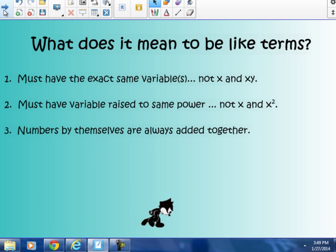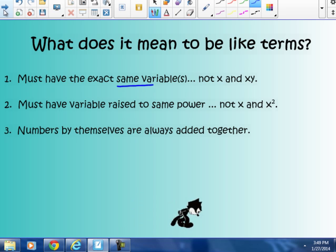What does it mean to be like terms? First, like terms. Like terms must have the exact same variable. Not like that example that we had in the last slide where it had an x and an xy. Those are not like terms. They must have the same variable, and those variables must be raised to the same power. So not like terms is x and x². This is x to the first, and that's x to the second.